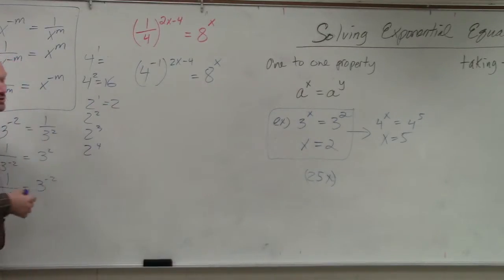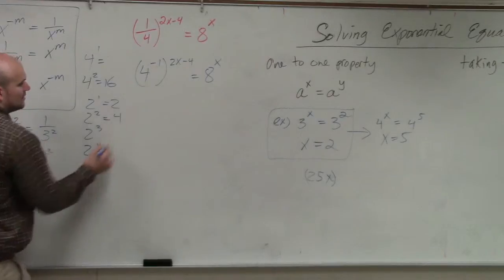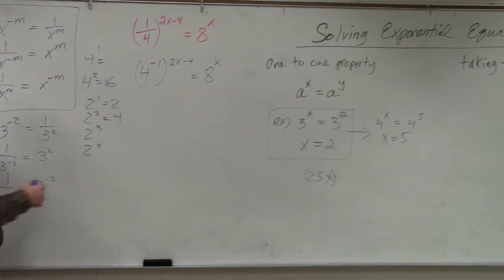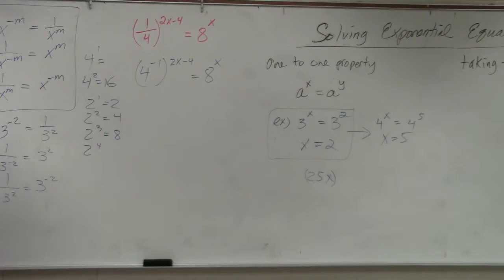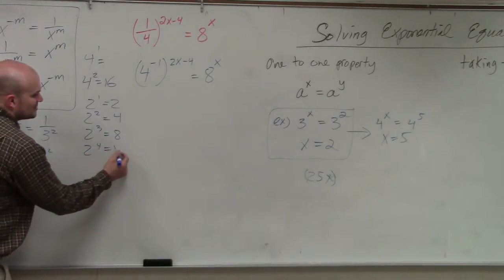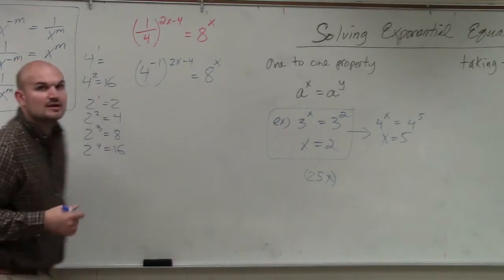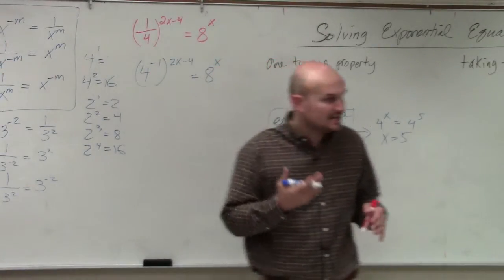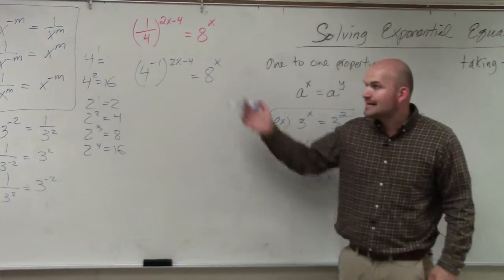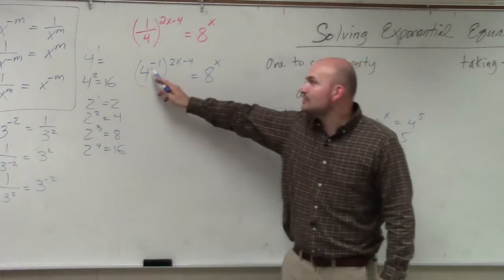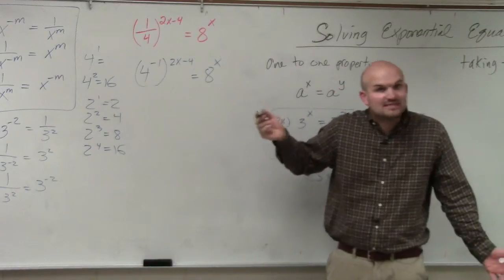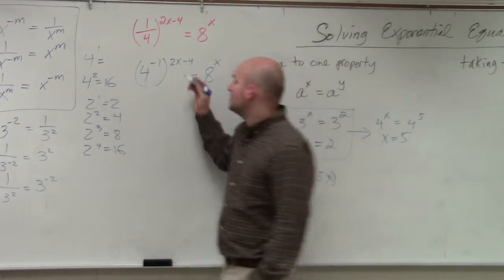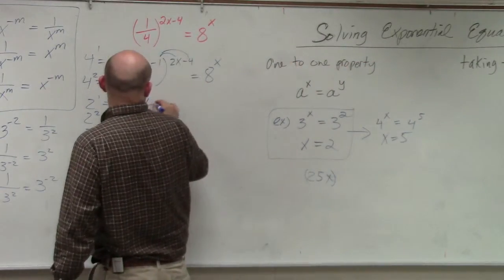2 to the first power is 2. 2 squared is 2 times 2, which is 4. 2 cubed is 2 times 2 times 2, which is 8. And 2 to the fourth power is 2 times 2 times 2 times 2, which is 16. So what you can see is that I can rewrite 4 and I can rewrite 8 with a base of 2. So first, I'll distribute this.